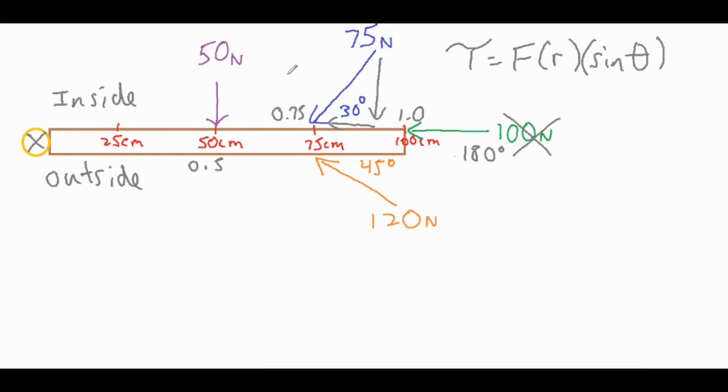So the 50 and the 75 are going to be providing a torque from the inside towards the outside and the 120 is going to be doing the opposite from outside to the inside. So what we're going to do is maybe call this the positive and call this the negative.